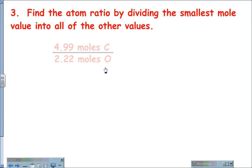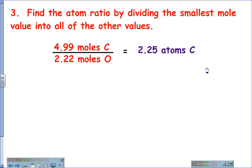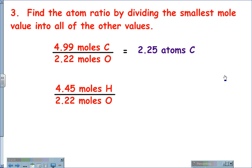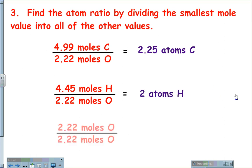Our smallest mole value in this case is 2.22 moles of oxygen. So when we divide to find the atom ratio: 4.99 moles of carbon divided by 2.22 gives us 2.25 atoms of carbon; 4.45 divided by 2.22 gives us 2 atoms of hydrogen; and 2.22 divided by 2.22 is, of course, one atom of oxygen.